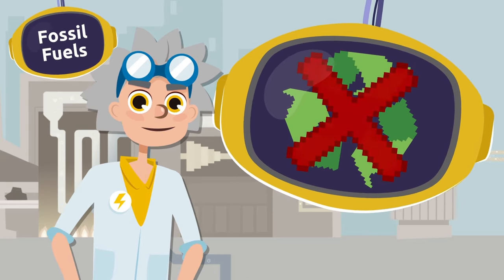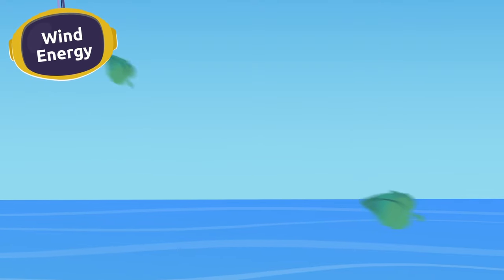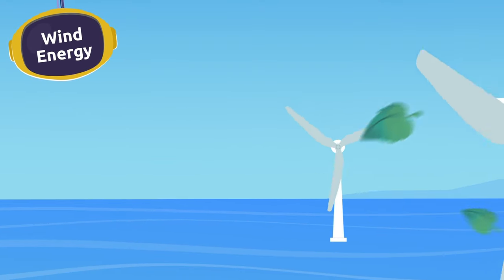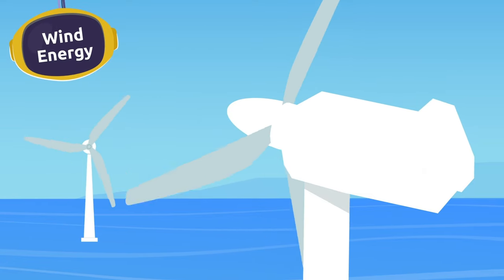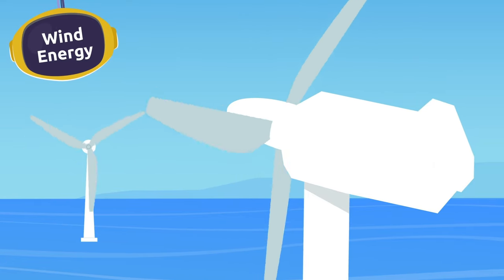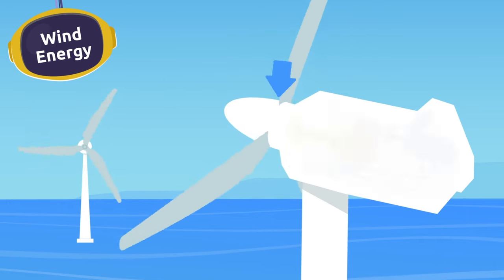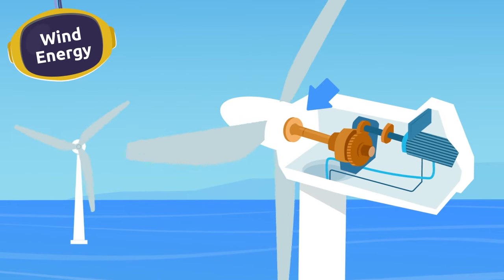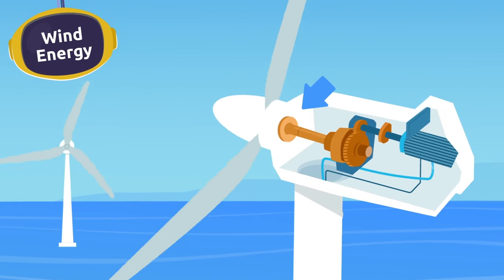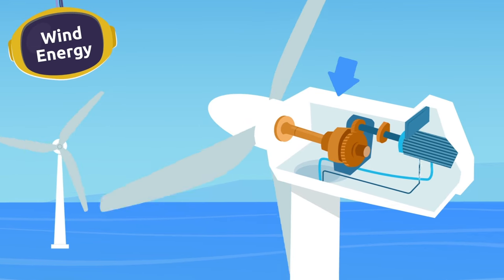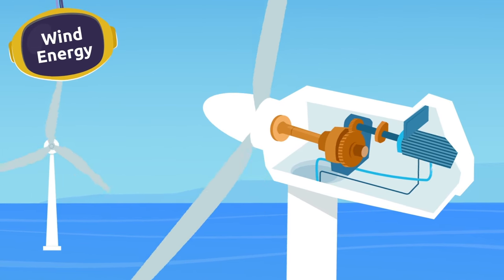Another way we can get electricity is by using the force of the wind — in other words, wind energy. Have you ever seen wind turbines? When the wind blows and pushes the blades of the wind turbines in a circular motion, it also turns a shaft, which activates the generator, producing electricity.